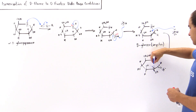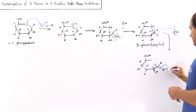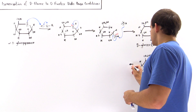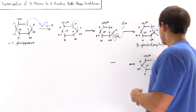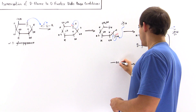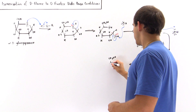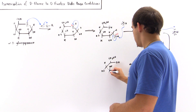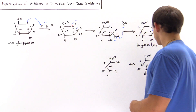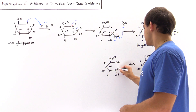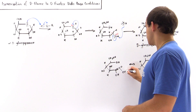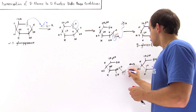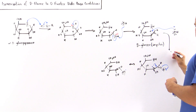If these two electrons form a pi bond here, that displaces the pi bond electrons onto the oxygen. We form the second resonance-stabilized structure, which has the OH group, primary alcohol group, H pointing up, OH pointing down, OH pointing up, H pointing down, OH, the pi bond formed here, carbon, H, and O — with a negative charge on this oxygen. This is our resonance-stabilized enolate.